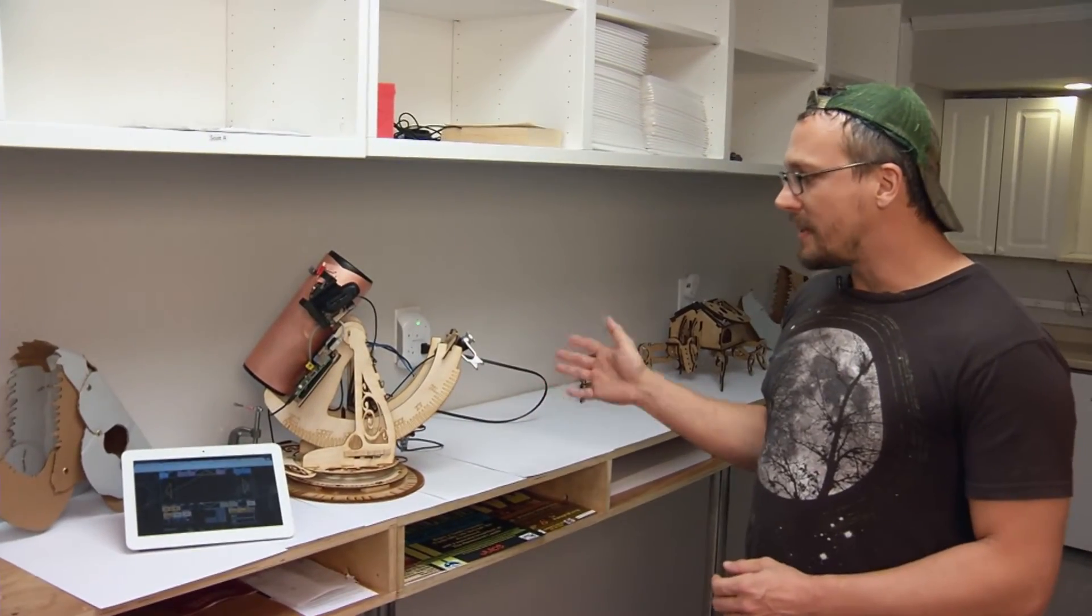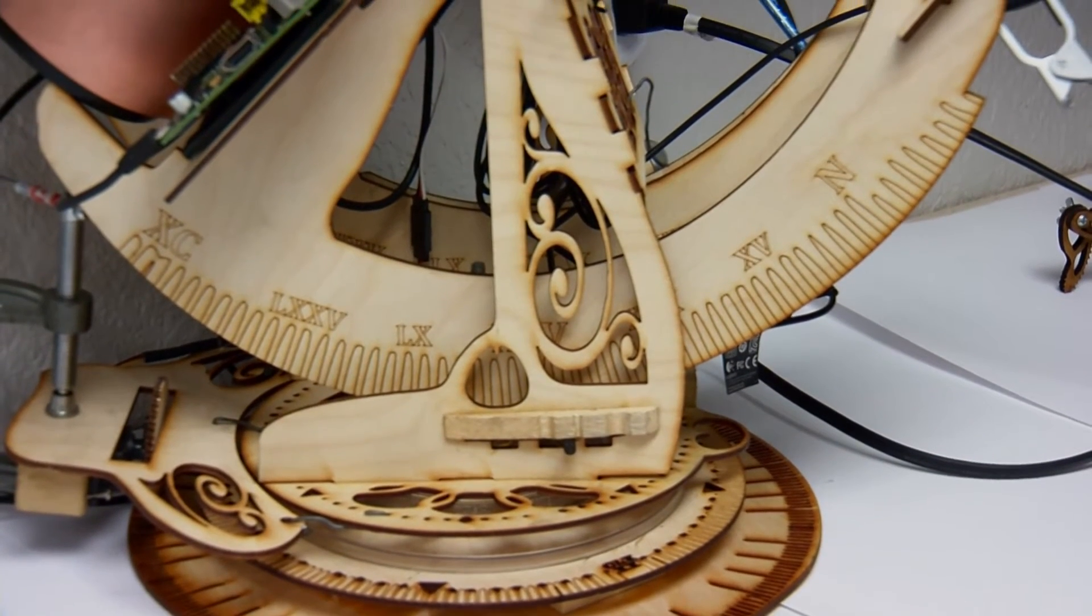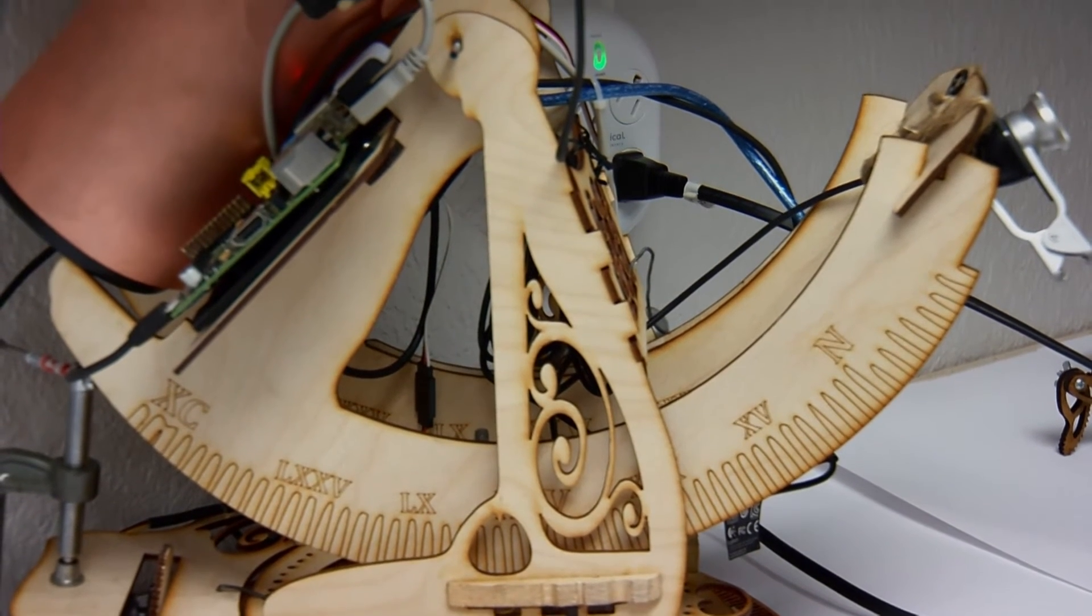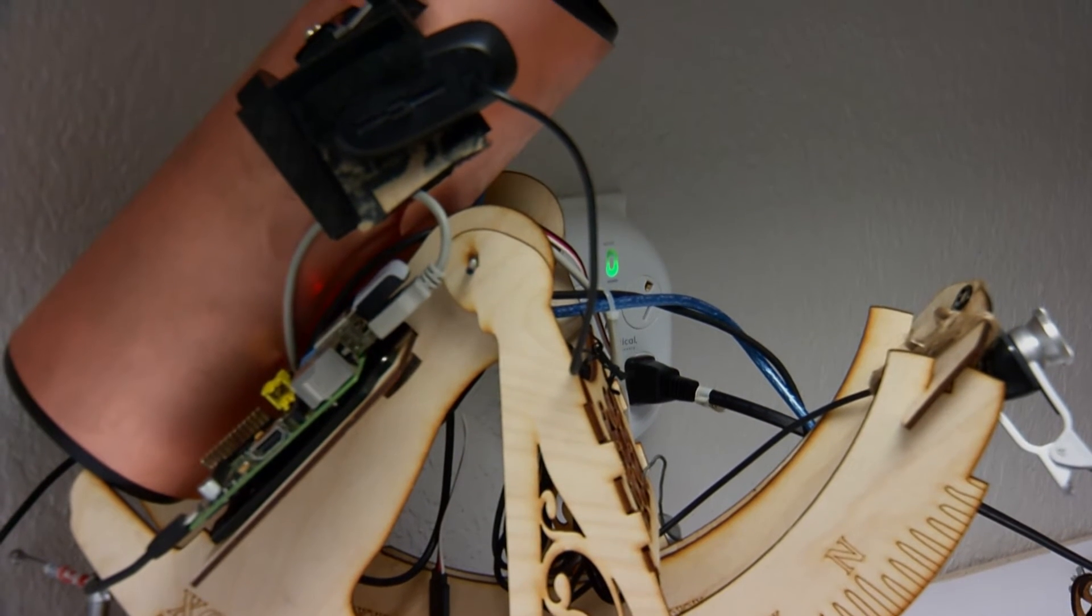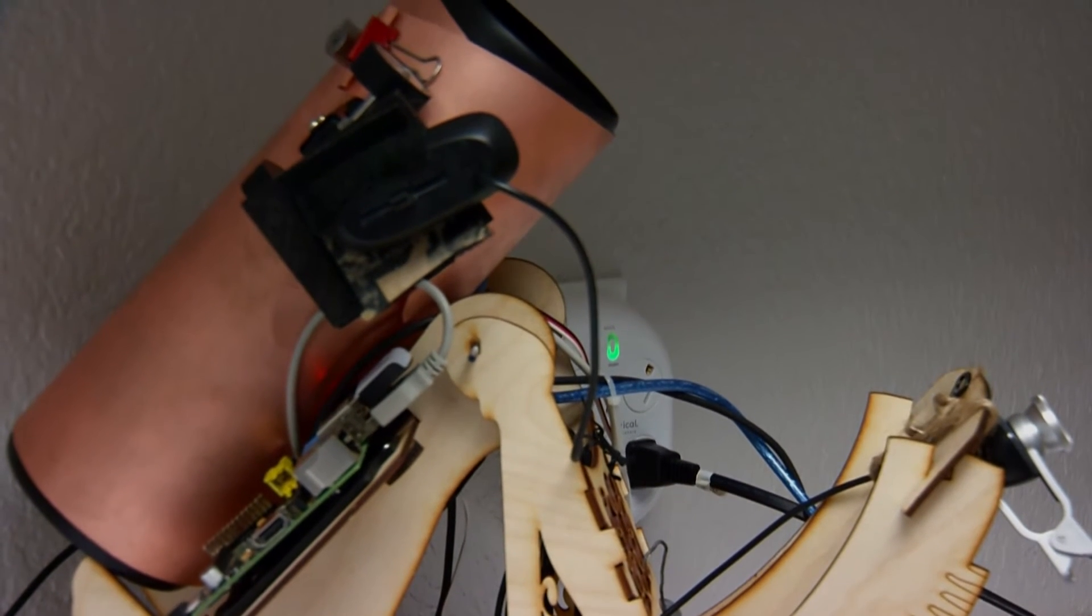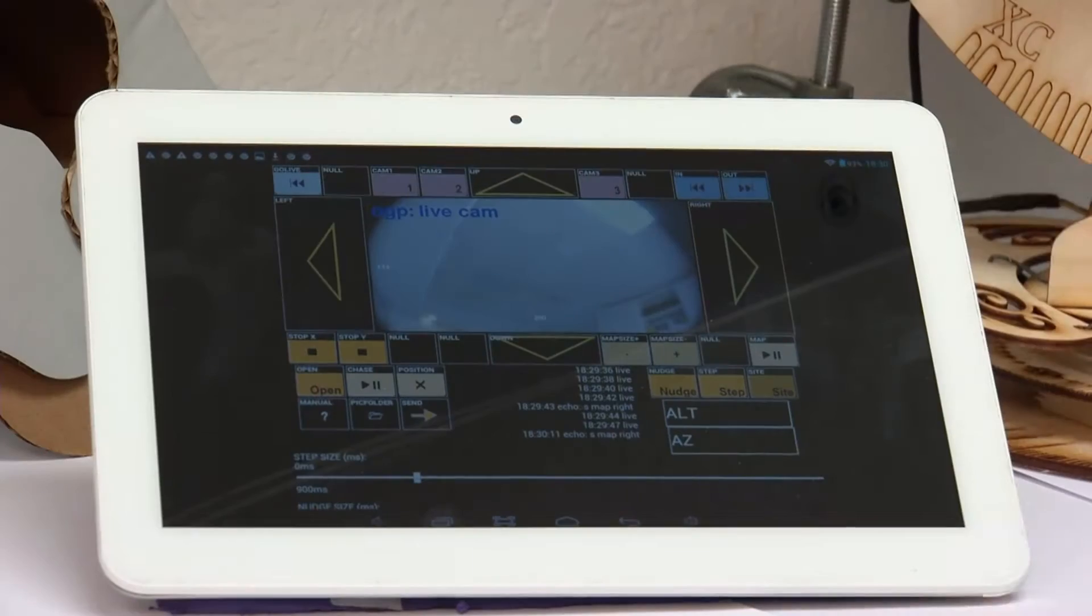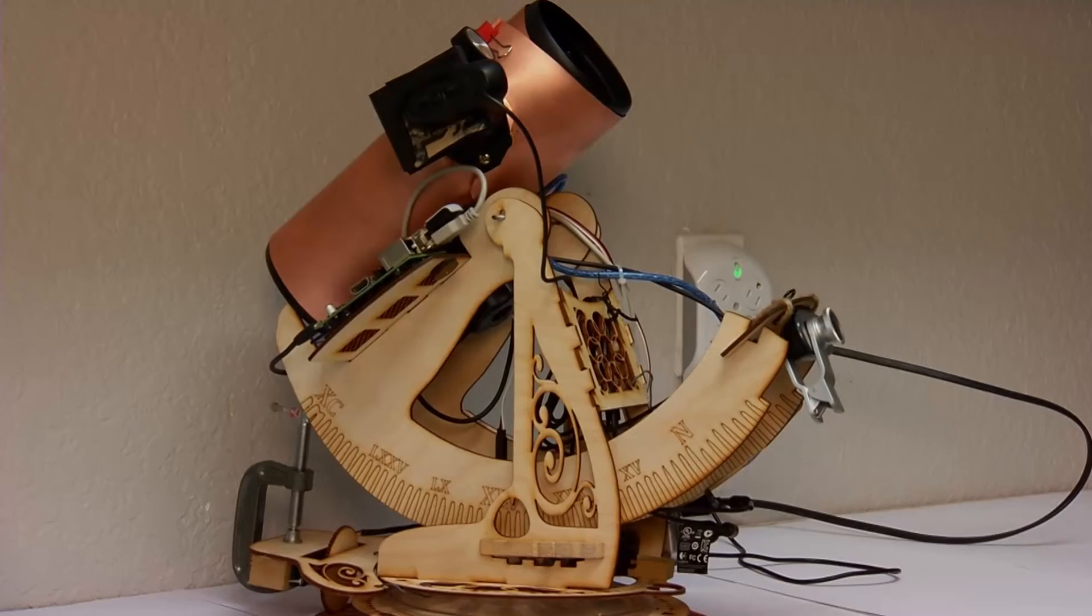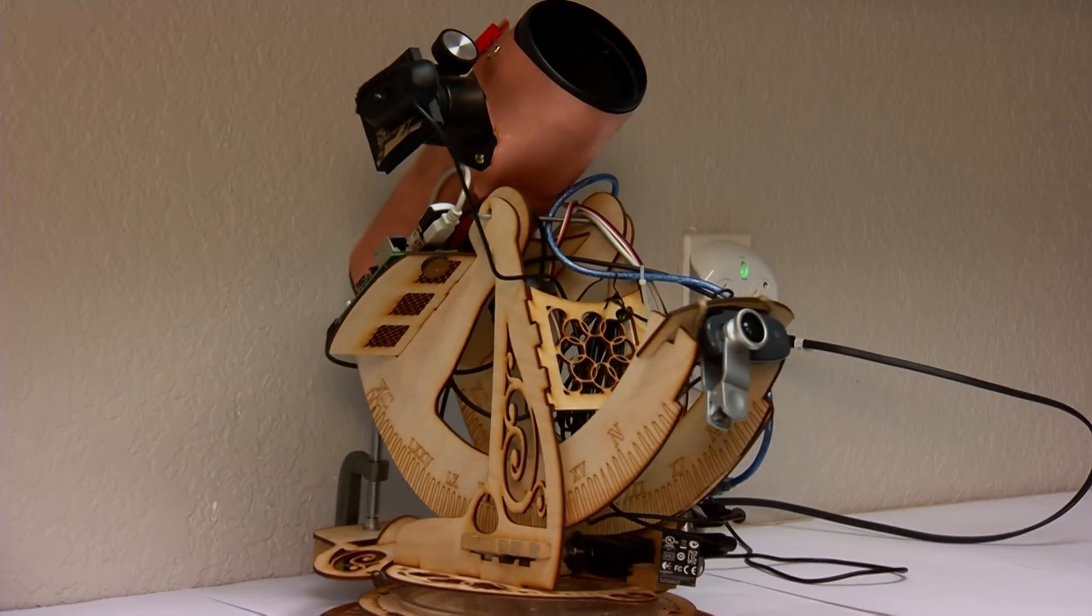This object exists in a niche of its own where it is the intersection of astronomy, computer programming, mechanical design, electronic design, graphic design, interface design. It has so many different aspects that it ties into for this specific piece. You can use it to point at objects in the sky and track them and take photographs of them. Or you can use it to map an area of the sky.